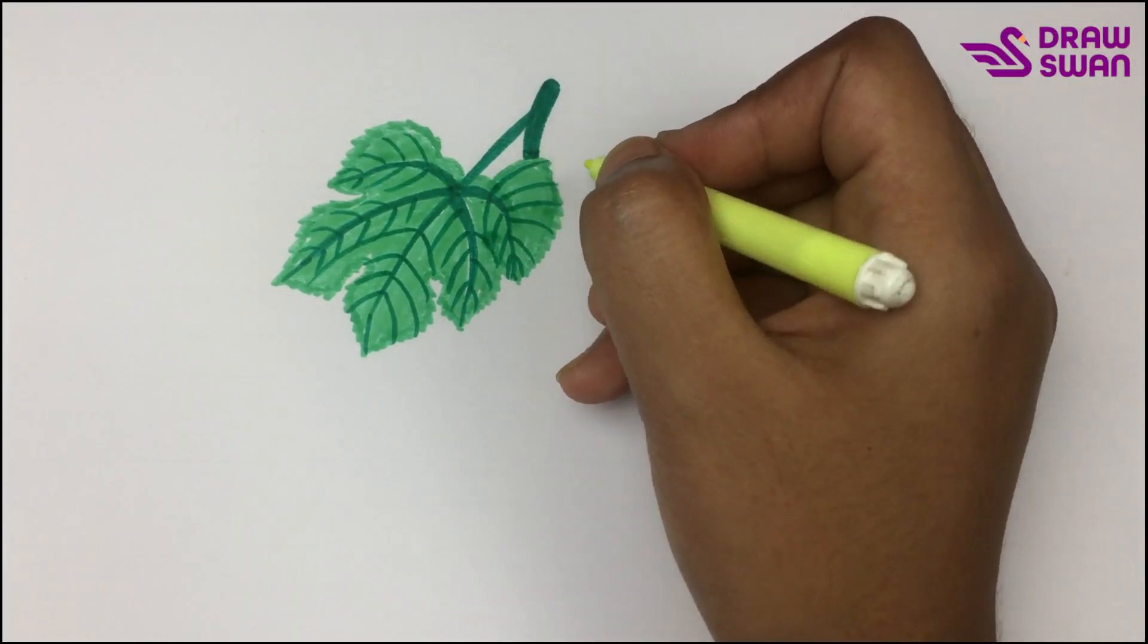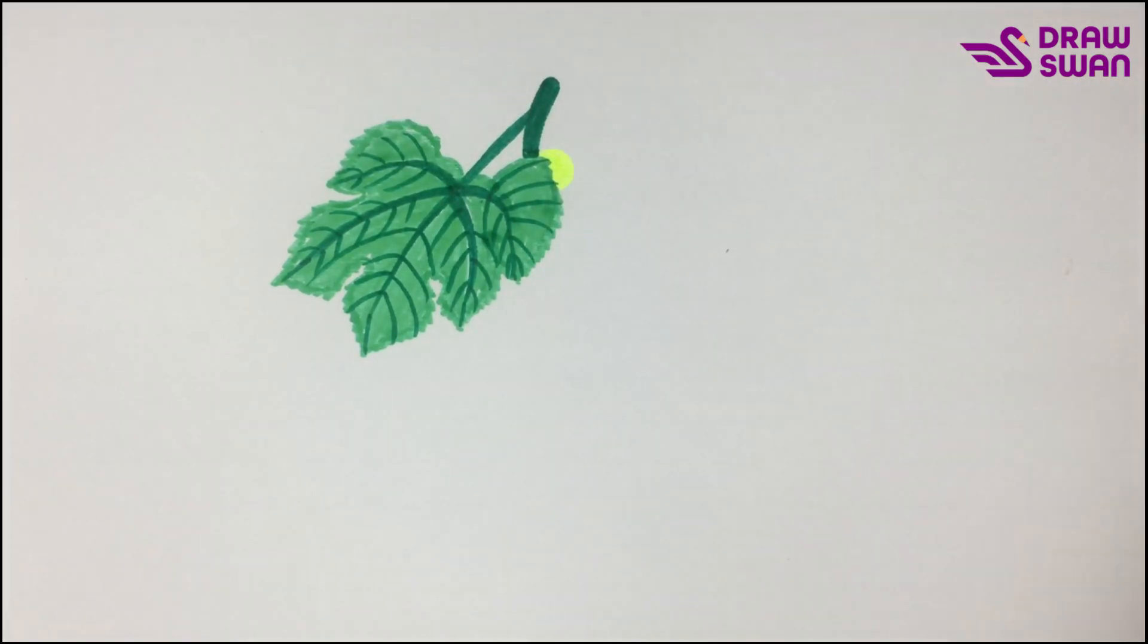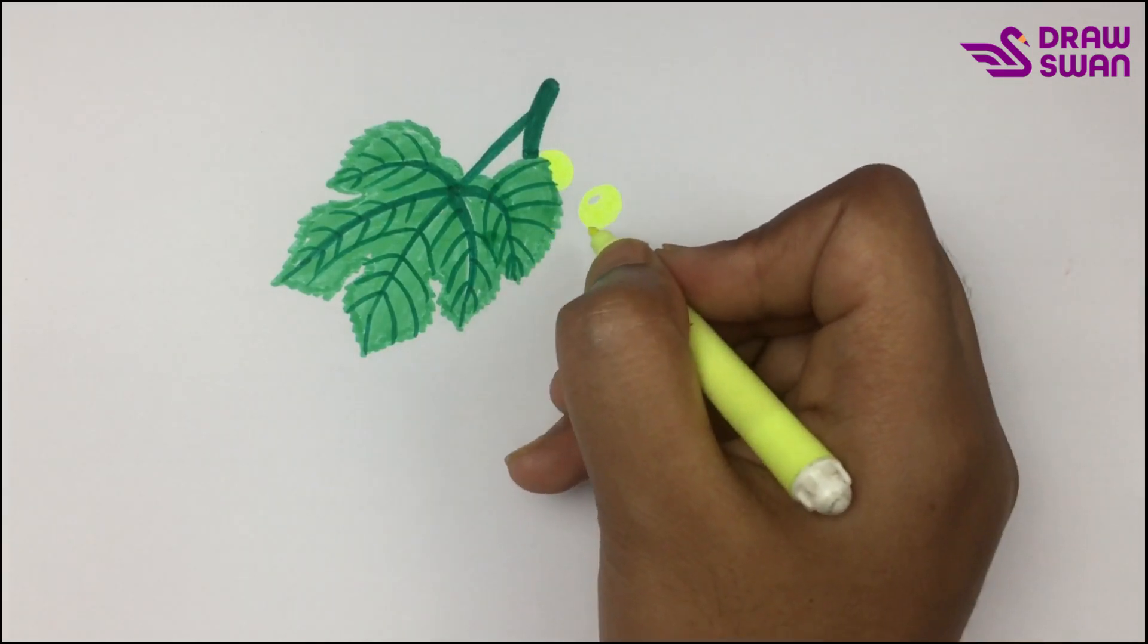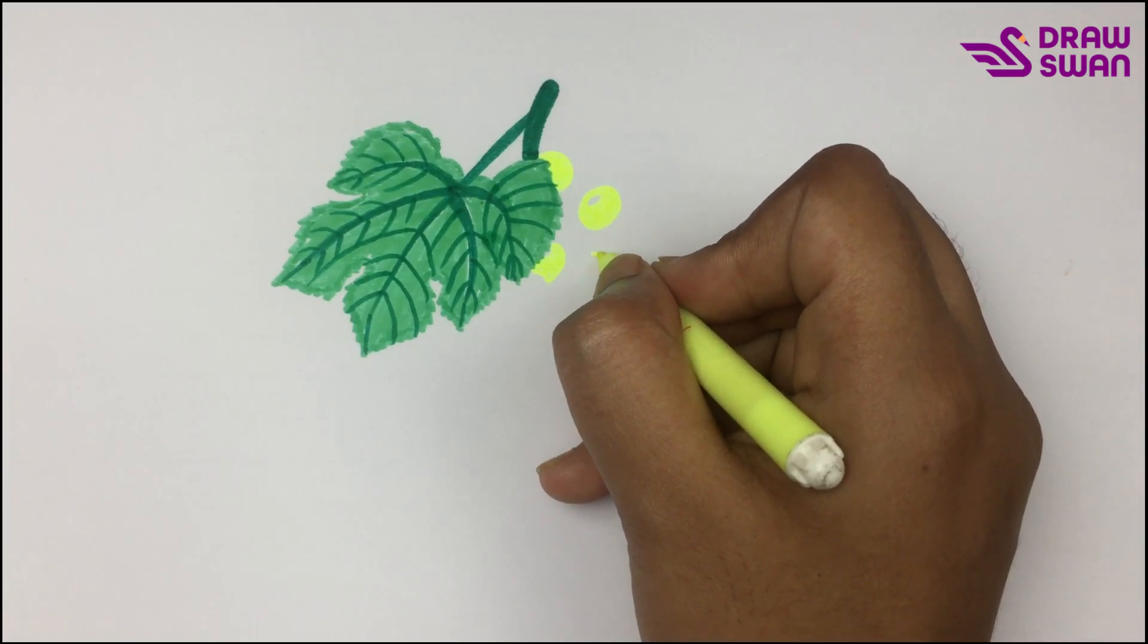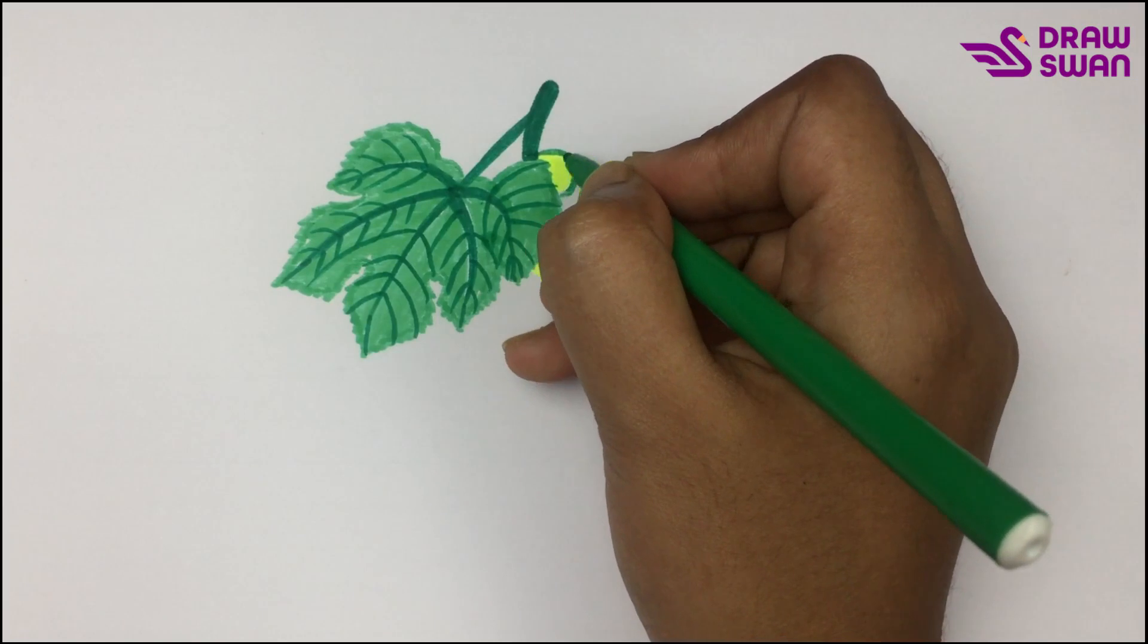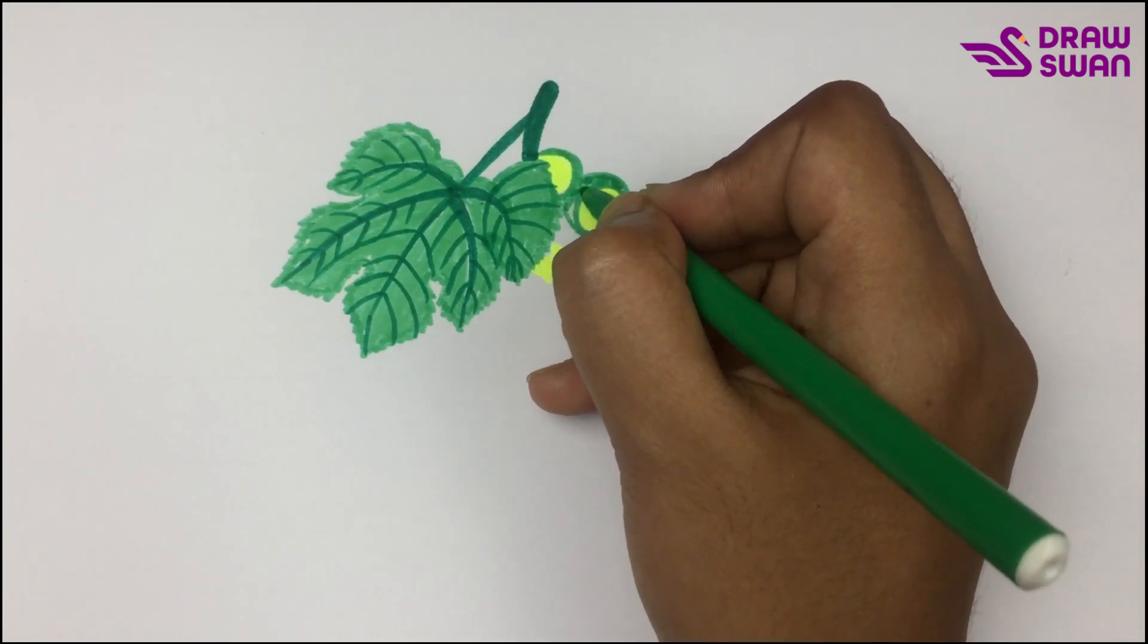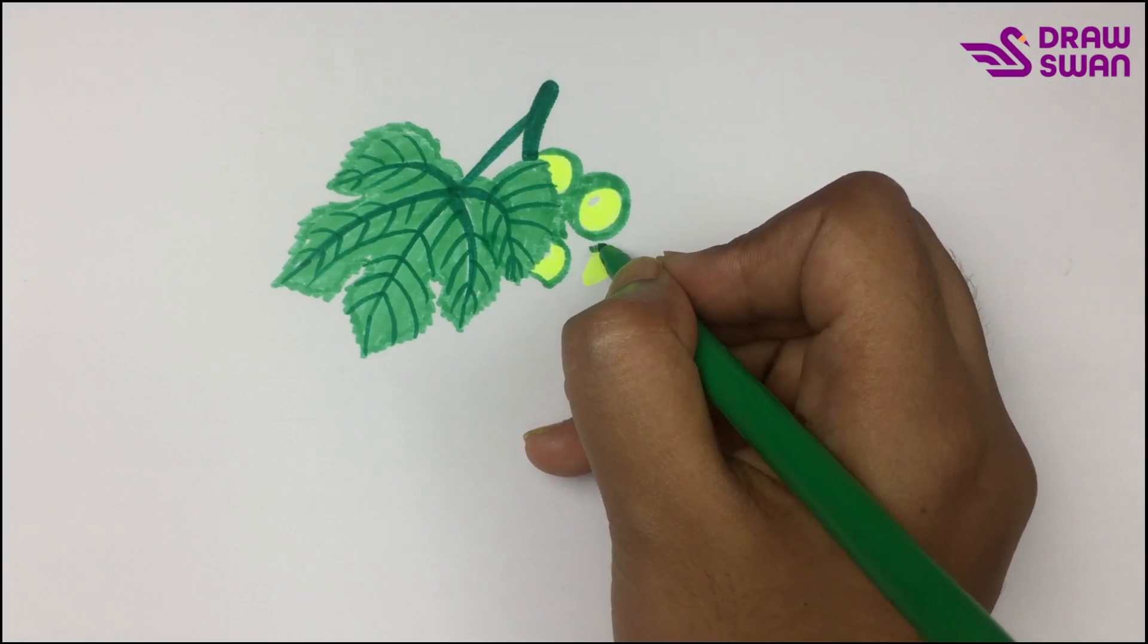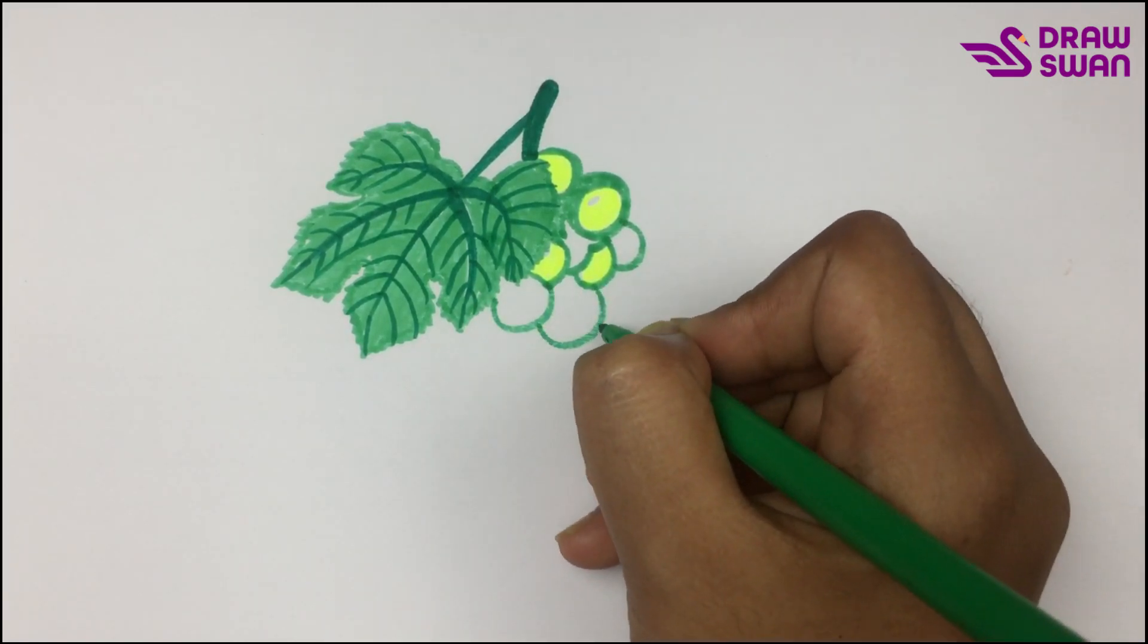I'm using my yellow-green pen to draw grapes. I'm using my green pen again.